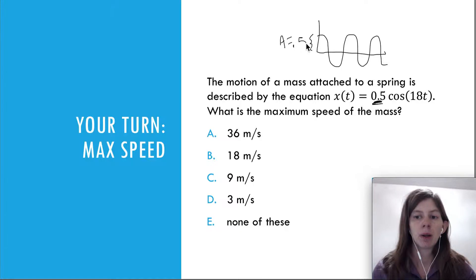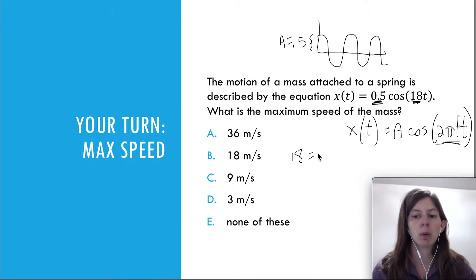And then we know that whatever is inside the cosine function, this argument here, whatever is in front of t is going to be equal to 2πf. How do we know this? Because the equation of motion has the form x(t) = A cos(2πft). That's the form of the equation that represents the motion of an object undergoing simple harmonic motion. So that's how we know that 0.5 corresponds to the amplitude and 18 corresponds to 2πf. So 18 equals 2πf.